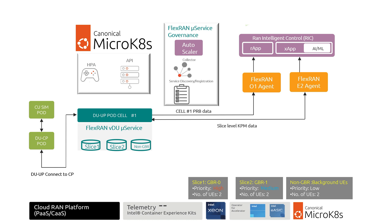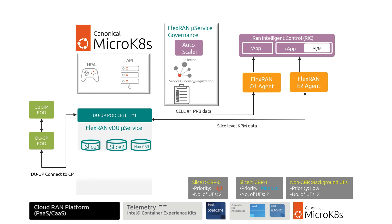SMO monitors cell PRB utilization through the O1 interface. When it finds cell 1 PRB utilization exceeds the predefined cell load threshold of 80%, SMO makes the decision to scale out another cell — cell 2 — and sends the decision to autoscale a microservice in the MicroKubernetes cluster. There are two autoscaling technologies provided by Kubernetes: HPA (Horizontal Pod Autoscaling) and VPA (Vertical Pod Autoscaling). FlexRUN Microservice Governance Autoscaler customizes the Kubernetes HPA solution, making it monitor and react to changes in VDU metrics like PRB rather than platform metrics like CPU and memory. The autoscaler triggers the DU-UP port scale-out operation through HPA to enable the second DU-UP port to hold cell 2 UP.